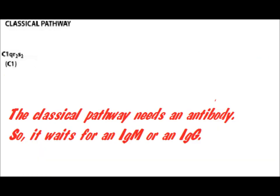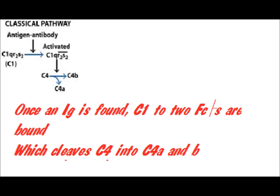The classical pathway needs an antibody. So it's IgG and IgM. Once an Ig is bound, C1qrs is bound, which cleaves C4 to C4a and C4b.